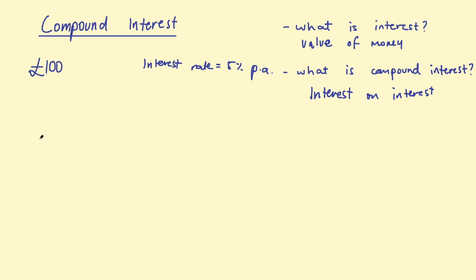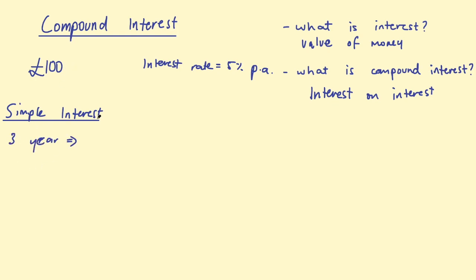Now I want to compare compound interest with simple interest. Simple interest is not paying interest on the interest — it's just a percentage of the initial amount per year. If we invested £100 for three years at 5% per year with simple interest, we would have 5% + 5% + 5%, that's £5 + £5 + £5, giving a total of £115 at the end of three years — so we've made £15.